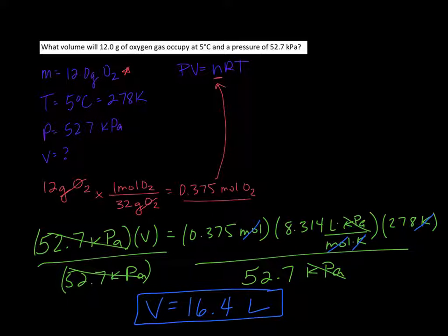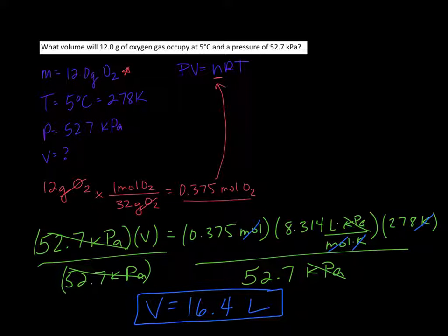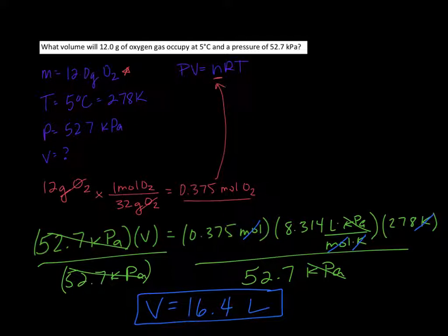The hardest part will be deciphering what kind of problem you have and knowing which equation to use. If you have two values for something — like two temperatures — use the combined gas law and cancel anything that's constant. If you only have one value for everything, you'll always use PUVNER, PV = NRT.